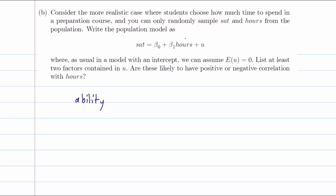How would ability relate to hours? Well, we can argue that someone who has high ability would not need to spend too much time in preparation. They will just prepare a little bit in order to get a good SAT score. So the correlation or the covariance between ability and hours is expected to be negative, as better ability requires fewer hours.